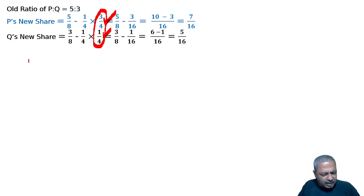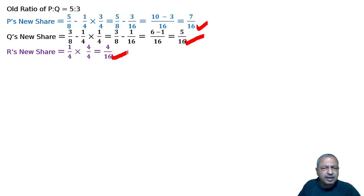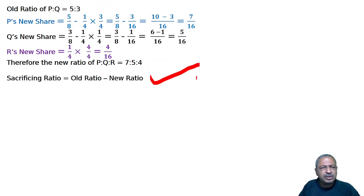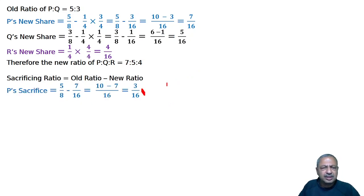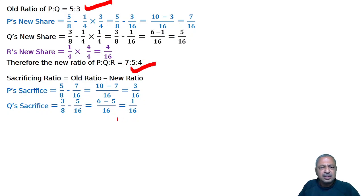R's new share is 1 by 4. To make common denominators of 16, 1 by 4 equals 4 by 16. So the new ratio P:Q:R is 7 is to 5 is to 4. Sacrificing ratio is old ratio minus new ratio. P sacrifices 5 by 8 minus 7 by 16, equals 3 by 16. Q sacrifices 3 by 8 minus 5 by 16, equals 1 by 16.